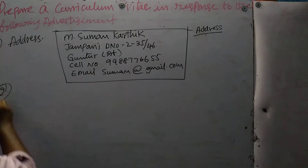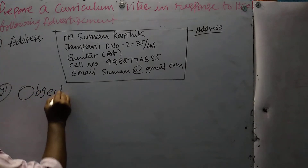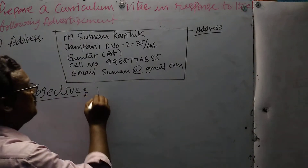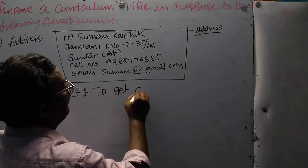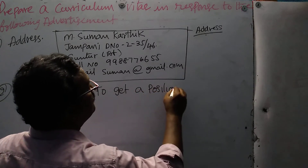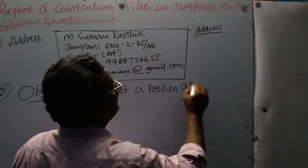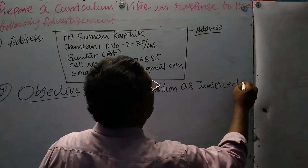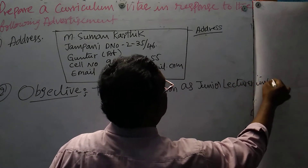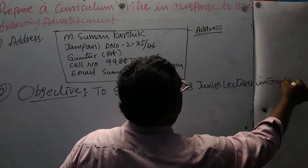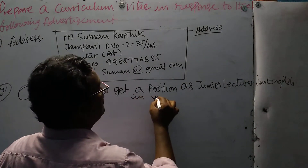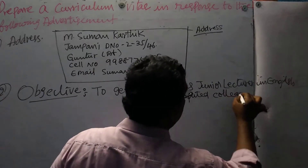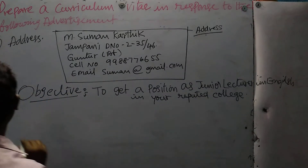Second one is objective. What is the objective — for which purpose the student is writing? To get a position as junior lecturer in English in your reputed college. This is the objective we have to write. Now, third one: